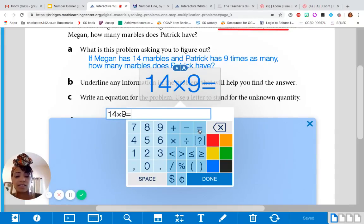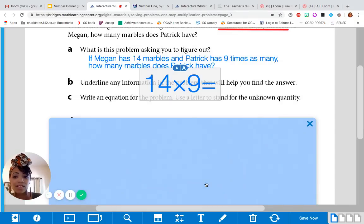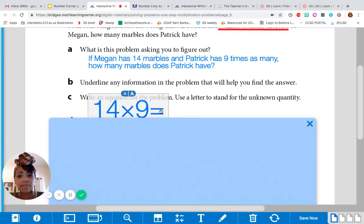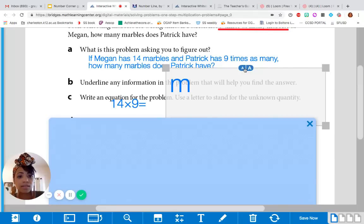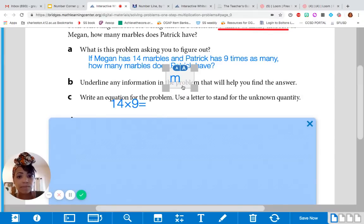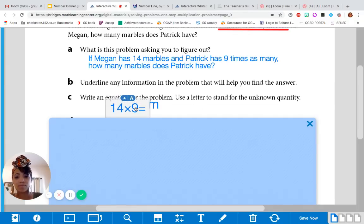Right, it said use a letter. So, what letter could we use? Maybe M for marbles? You got it. Okay, so, we have 14 times nine, and I'm going to say equals M. We'll make that smaller. We can put M here. Now, are we done with our equation?